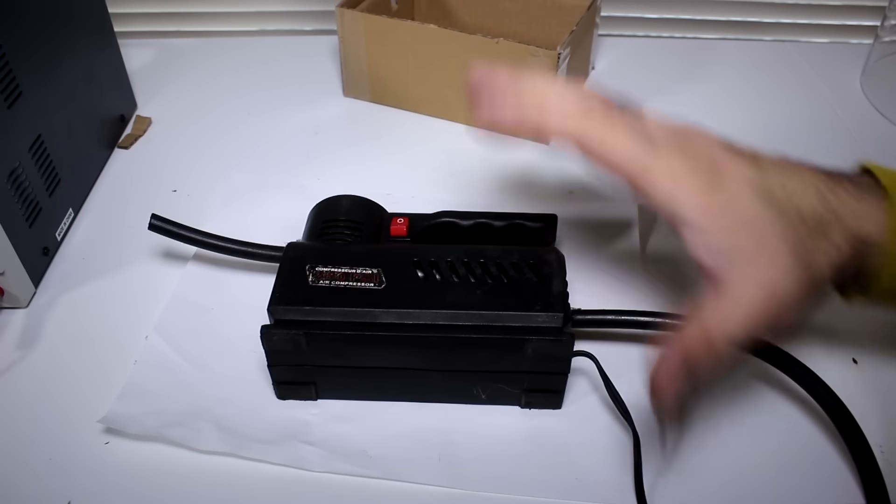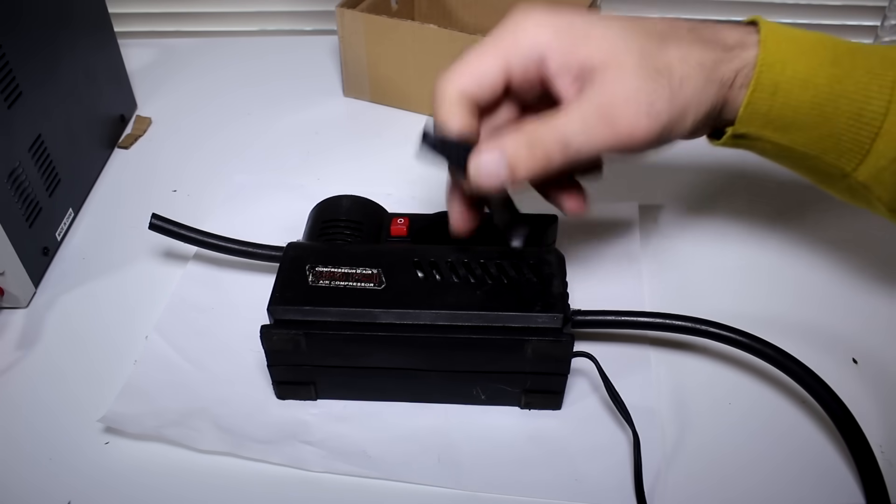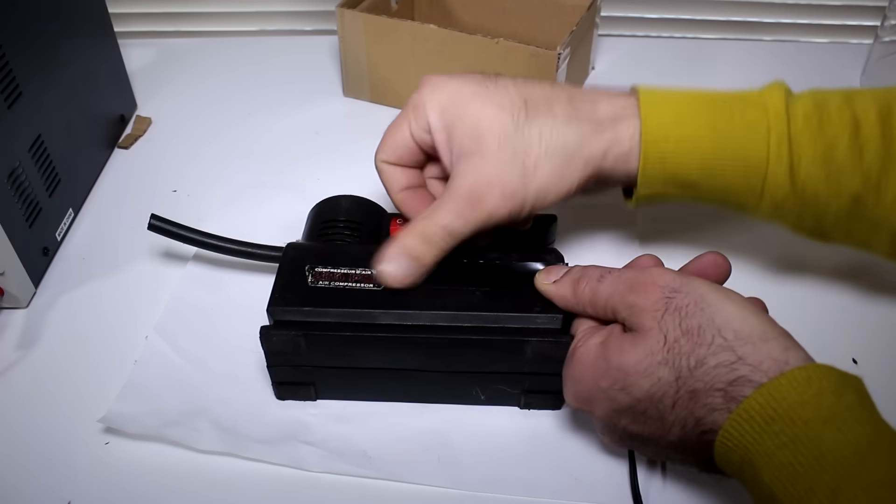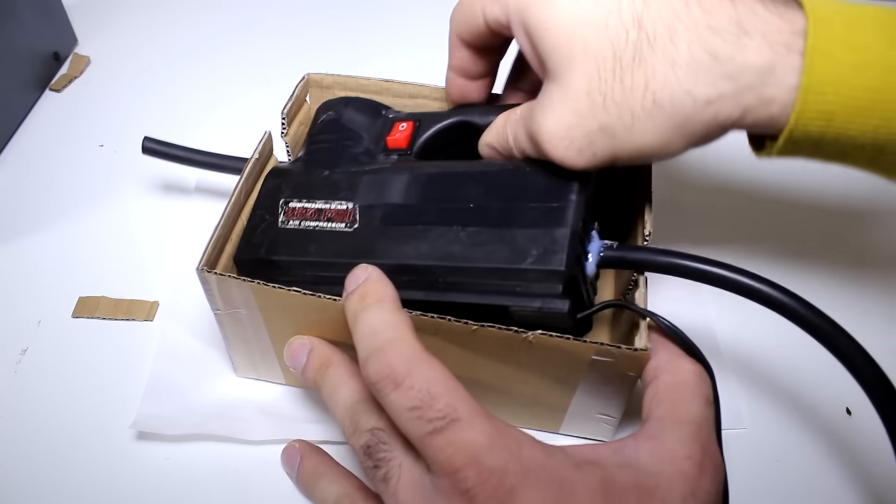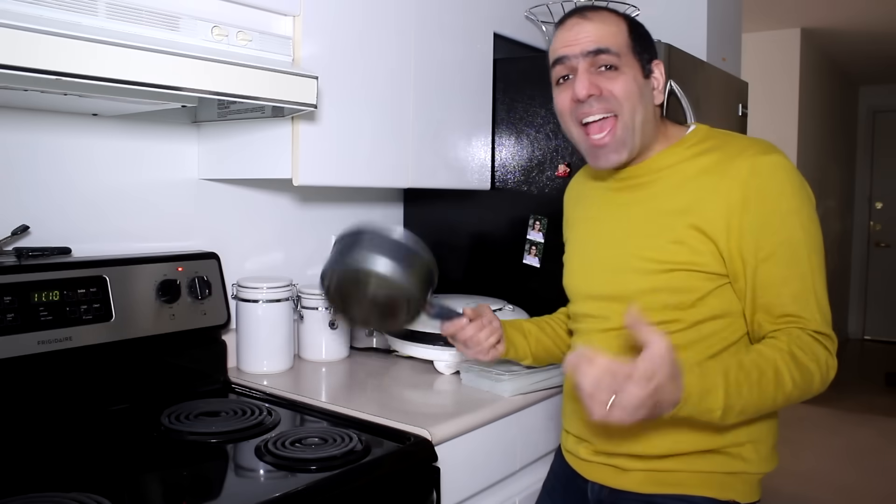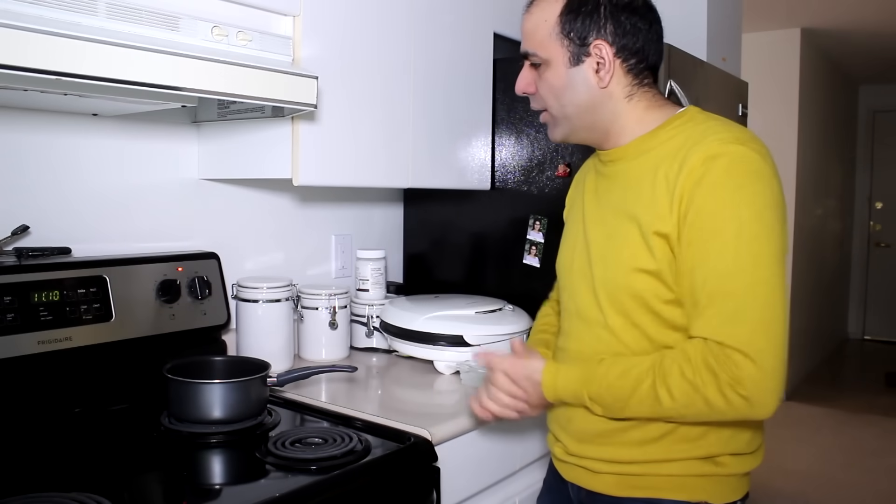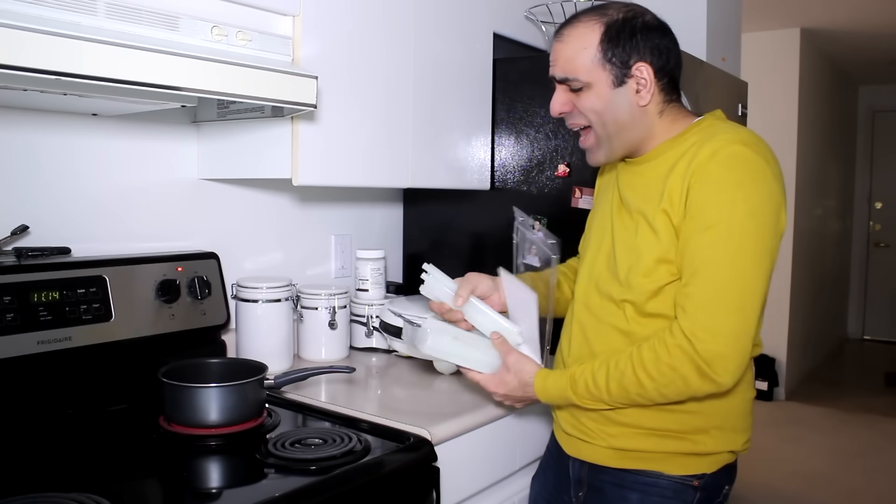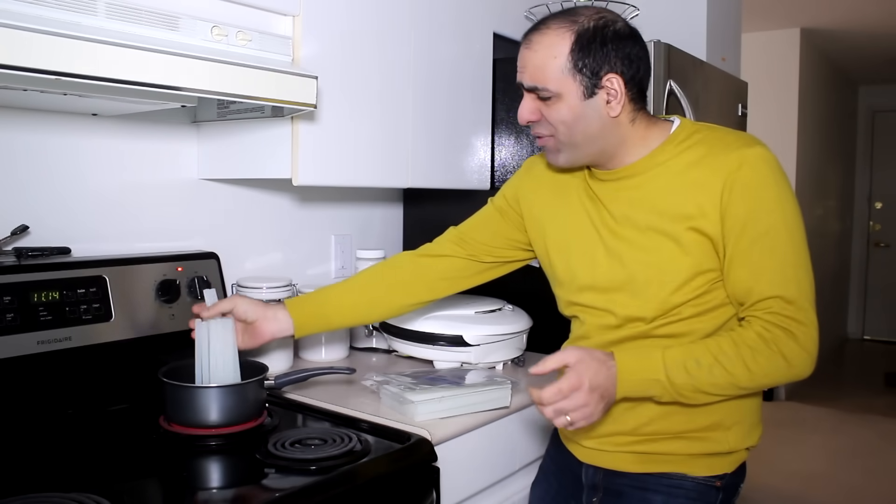Now I want to hot glue all around it to seal it. But to prevent the hot glue from getting inside, I have to cover all the openings. Now it's ready to be filled. We put our pot on the oven and set this to high. Who turned this on? Now we cook a fresh batch of hot glue noodles to perfection.